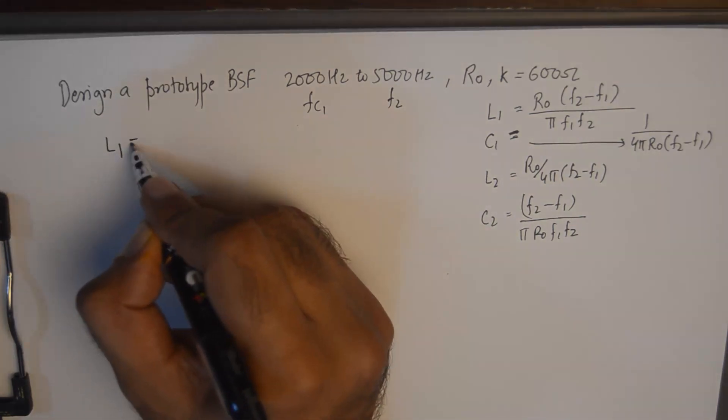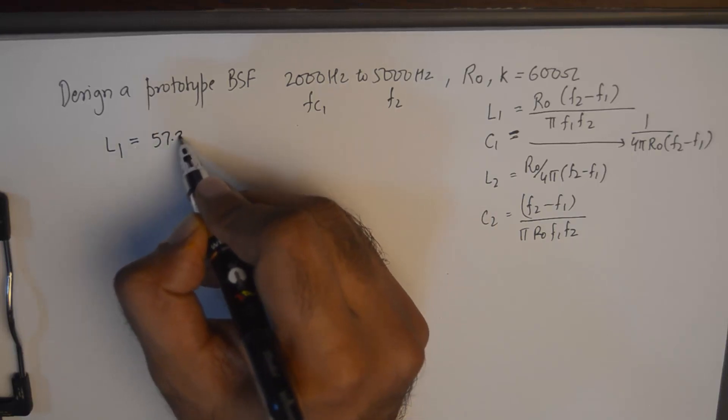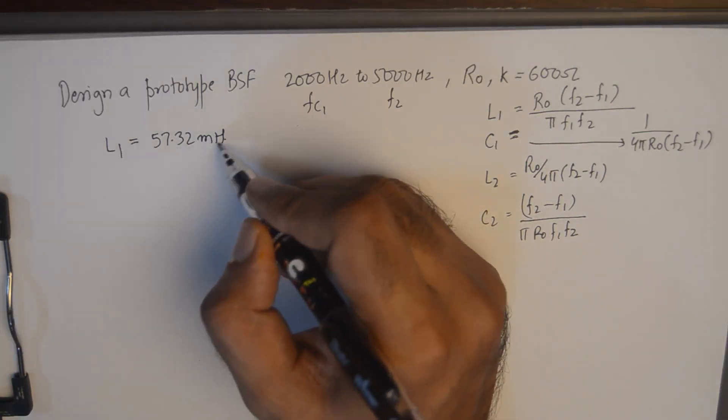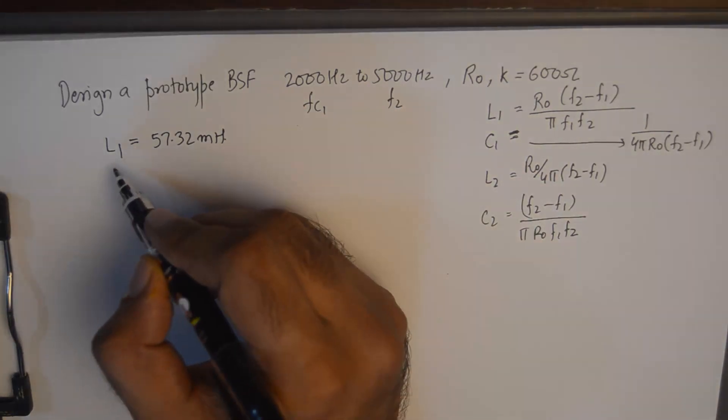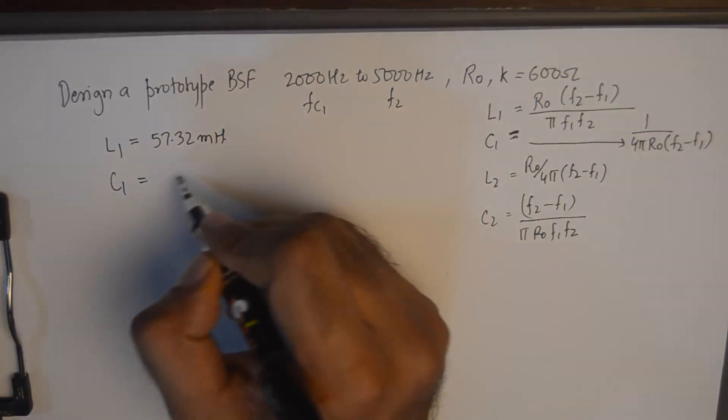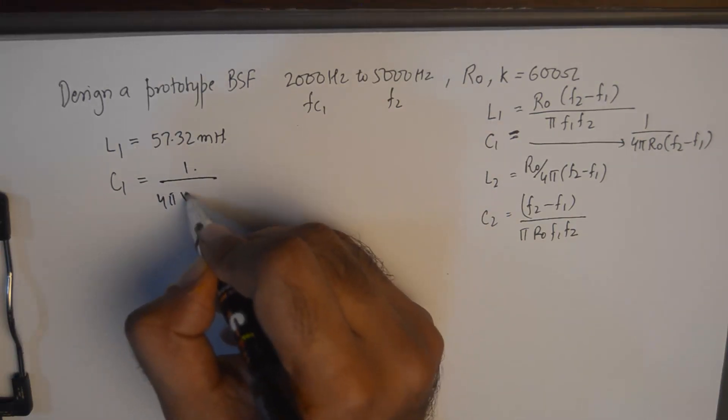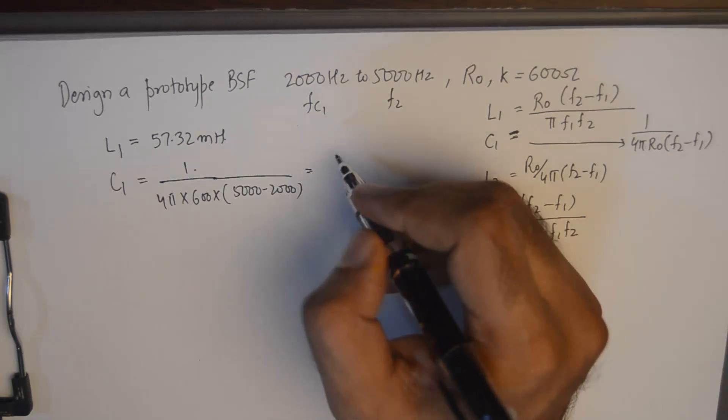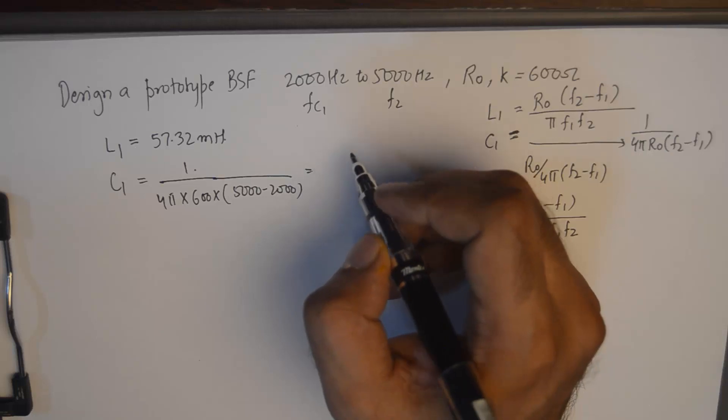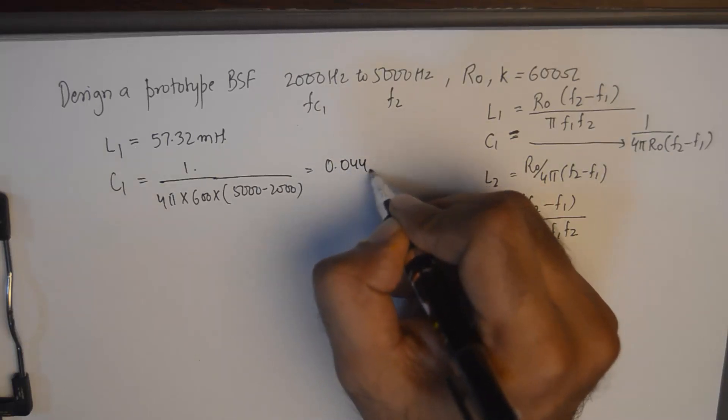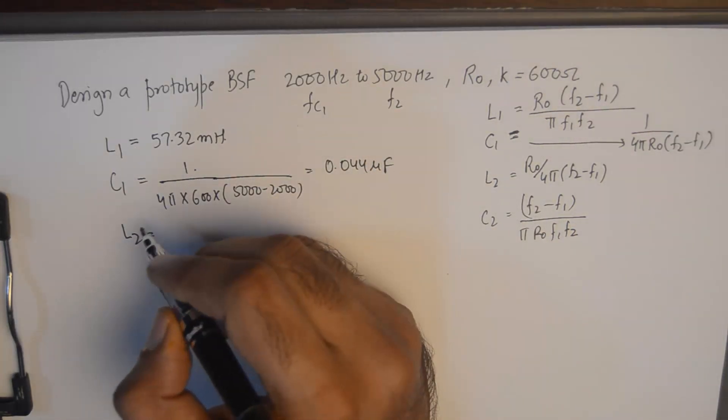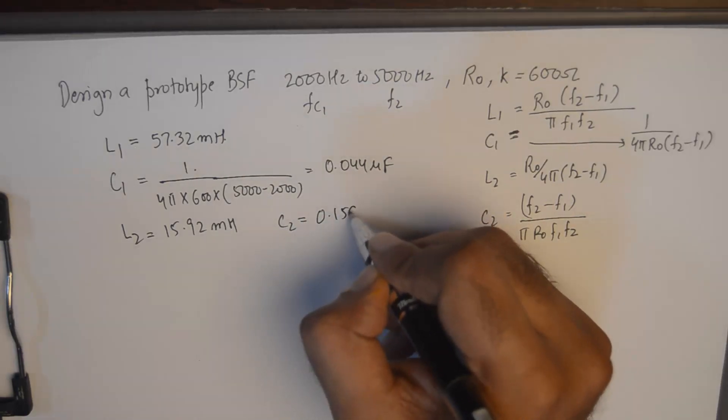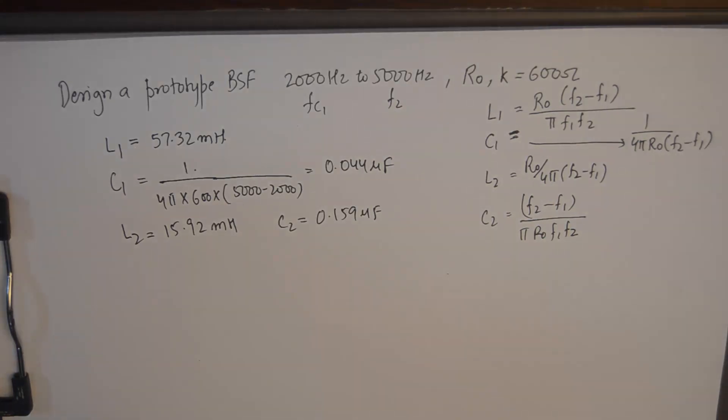Substituting the values of FC1 and FC2 into these formulas, you'll get the value of L1 to be equivalent to 57.32 mH. As I discussed in the previous video, the standard notation of expressing inductance is in mH for filters. And if you put the values of these parameters in the formula for C1, which will be 1 upon 4pi into 600 into 5000 minus 2000, you'll get the value of C1 and you'll need to express it in terms of microfarad. So it'll be 0.0442 microfarad and L2 comes out to be equivalent to 15.92 mH and C2 comes out to be equivalent to 0.159 microfarad.